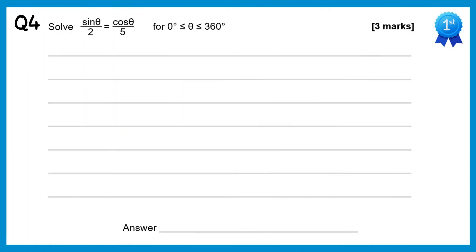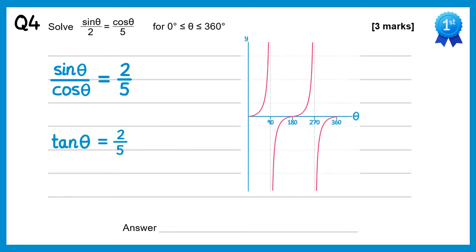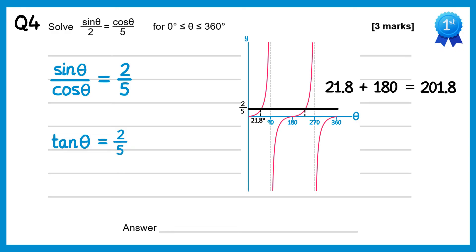For this question we're going to multiply by 2 on both sides and also divide by cosθ on both sides. This gives sinθ over cosθ equals 2/5. Of course sinθ over cosθ is the same as tanθ, so we get tanθ equals 2/5. Looking at the graph of tanθ and drawing a line at 2/5, there are two solutions. Inverse tan of 2/5 gives 21.8 degrees, and adding 180 gives 201.8 degrees.